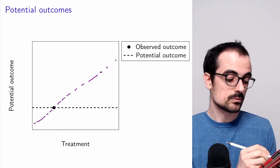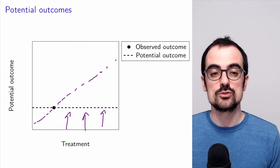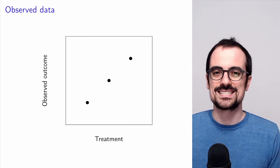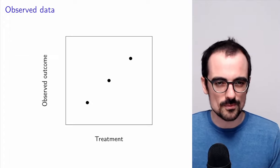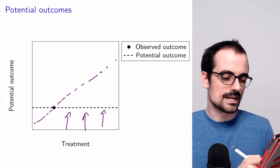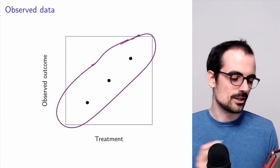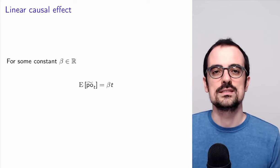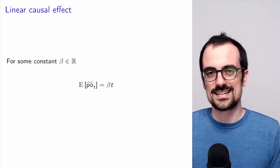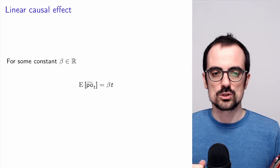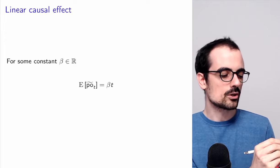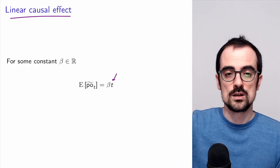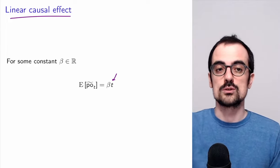The difficulty is that we don't get to see the potential outcomes for any treatment other than the one that actually happened. Looking at the observed data set, we might think the observed outcome is proportional to the treatment — but there was no causal effect at all. In order to estimate causal effects, we need a certain assumption. We're going to try to estimate linear causal effects where, on average, the treatment has a linear effect beta on the potential outcome.